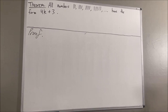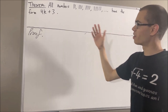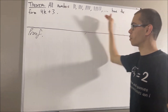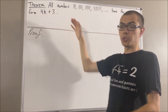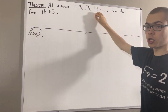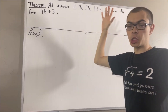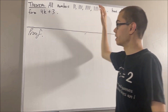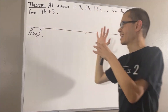Hello! In this video, we are going to prove the following theorem. All of these numbers have the form 4k plus 3. So for example, if we consider the number 11,111, we can find some integer k such that 11,111 is equal to 4k plus 3.